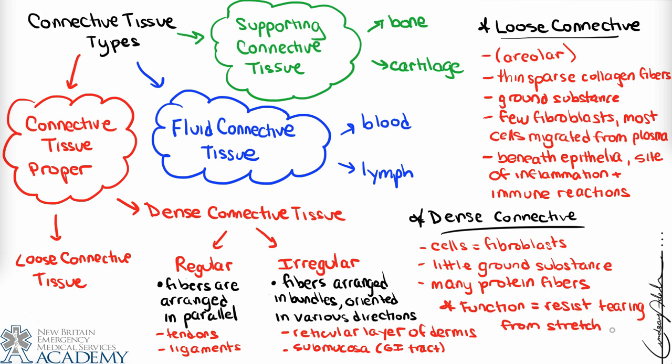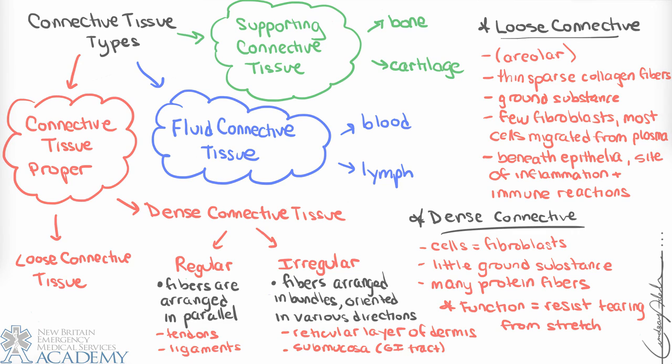That wraps up our overview of connective tissue. We'll follow this up with a quick discussion on membranes, which are usually a combination of epithelial and connective tissue, and also an example of tissue injury and repair. Other examples such as bone and blood will receive more attention in separate sections.